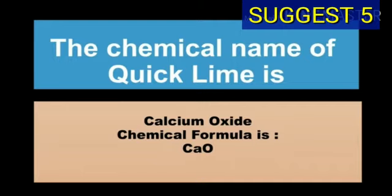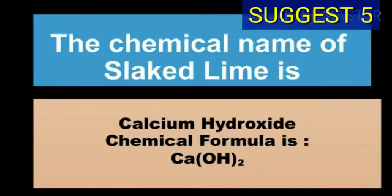The chemical name of quick lime is calcium oxide and chemical formula of quick lime is CaO.